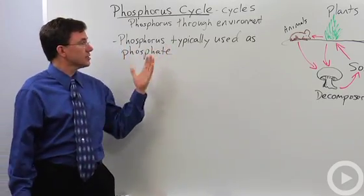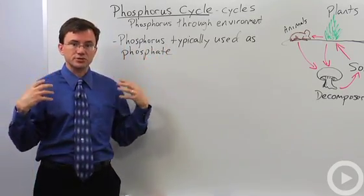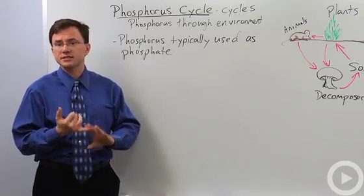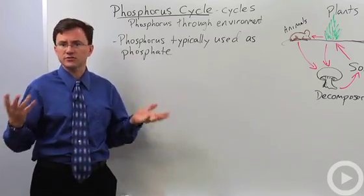So phosphorus typically is used in biological systems as phosphates, an important ingredient in things like DNA, ATP, phospholipids, etc.